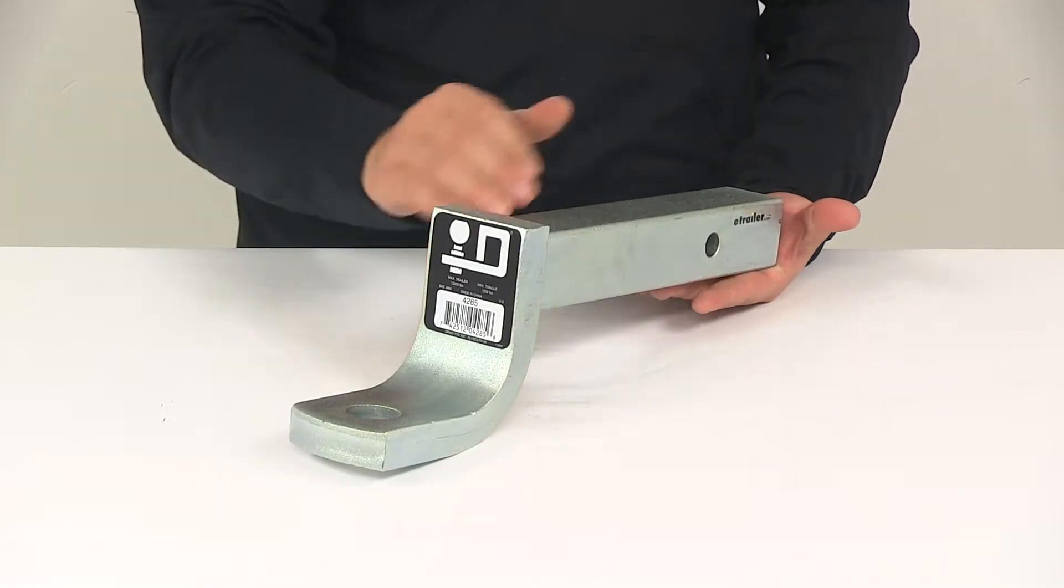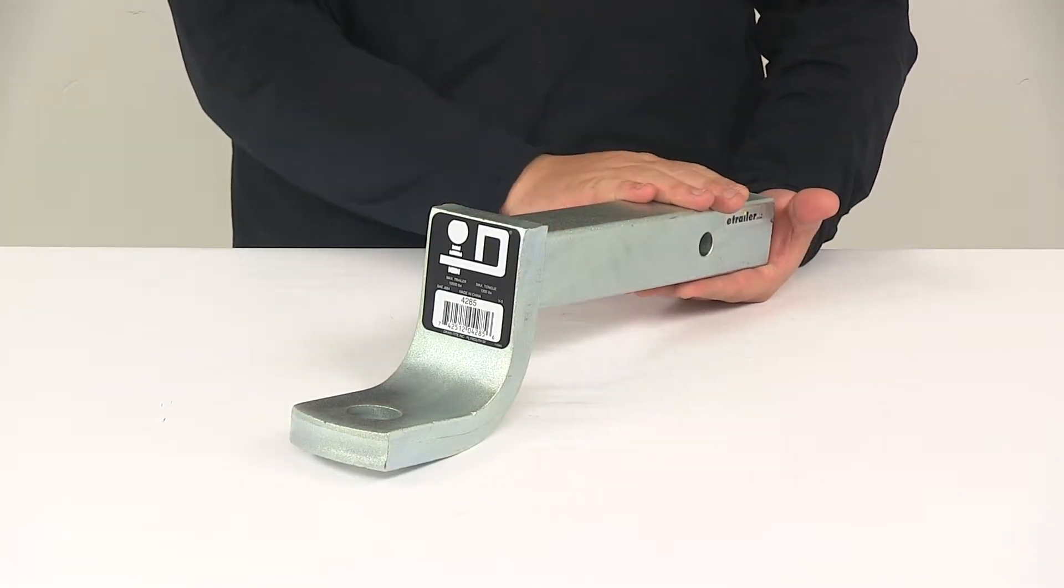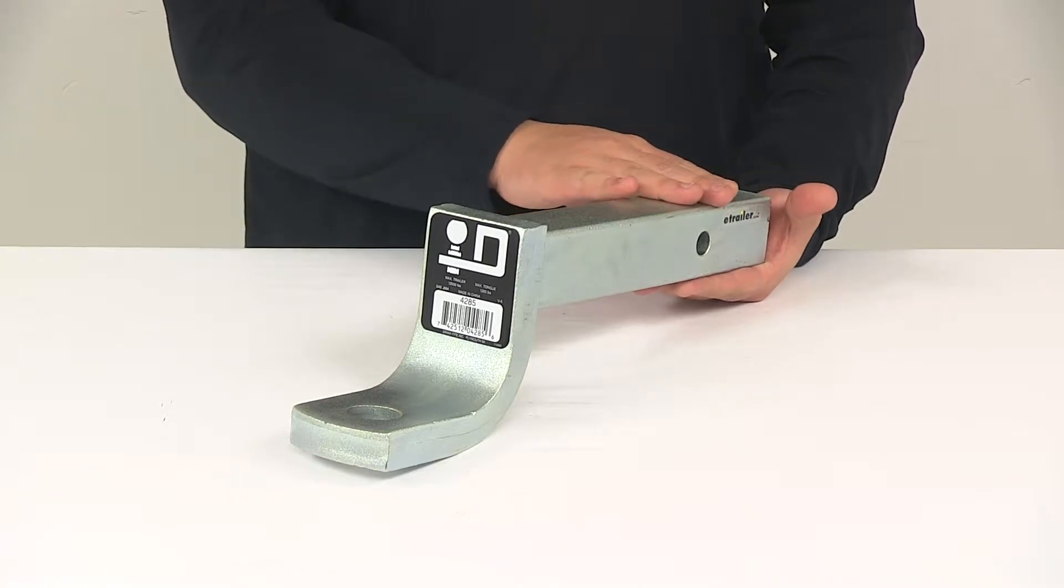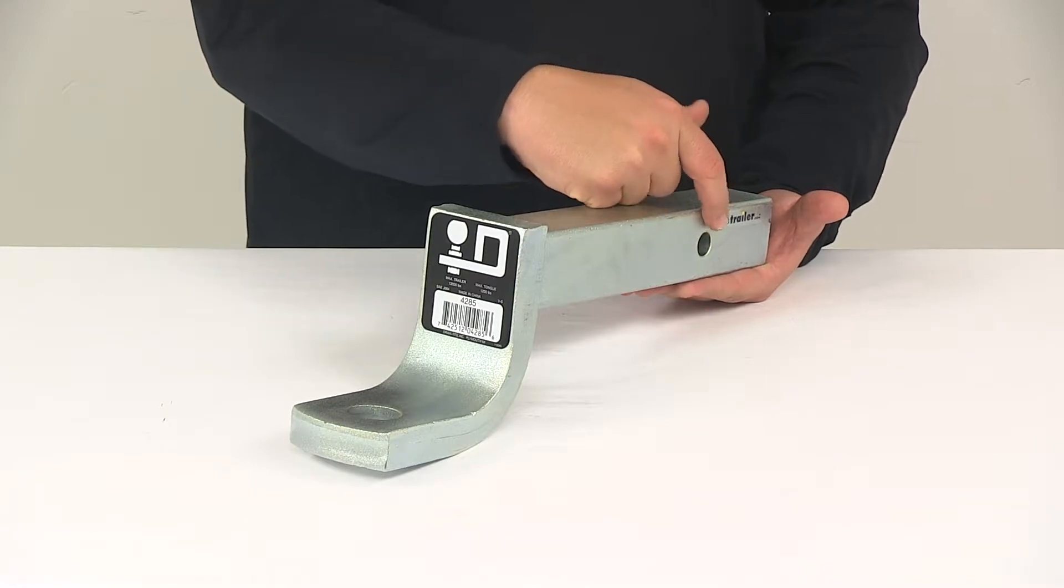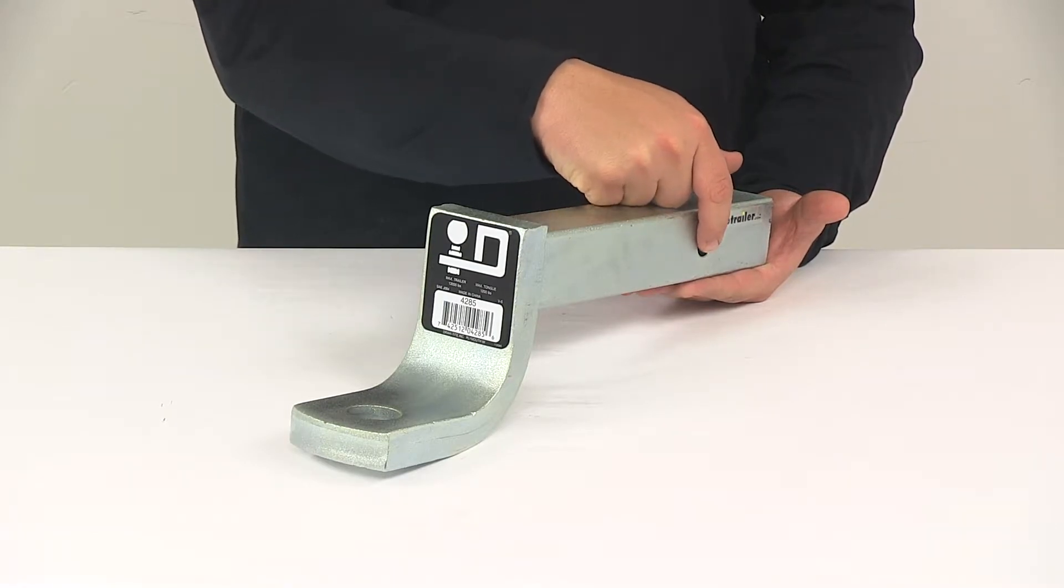To get it secured inside of your hitch, you will need to secure it with a hitch pin and clip or a hitch lock. Those items are sold separately and are available here at etrailer.com. The pin holes on this mount will accept a standard 5⅛ inch diameter pin.